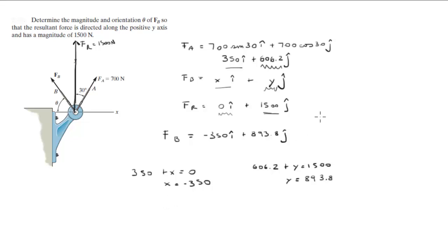So now we need to find the magnitude. The magnitude of F of B is equal to the square root of x squared plus y squared, which we found already, so the magnitude of F of B comes out to be 959.88.